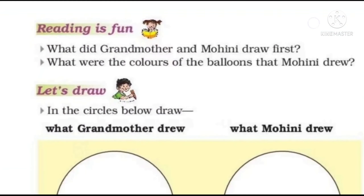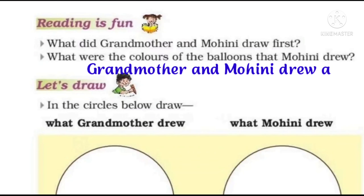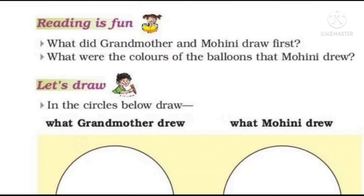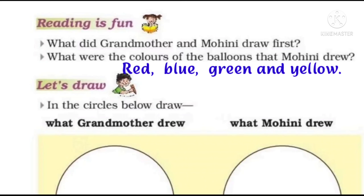Now let's move. The reading is fun. What did grandmother and Mohini draw first? Yani ki Grandmother aur Mohini ne sabse pehle kya banaya tha? The grandmother and Mohini drew a circle. What were the colors of the balloons that Mohini drew? Mohini ne jo balloons banaye the, woh kaun kaun se color ke the? The colors of the balloons were red, blue, green and yellow.